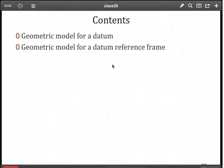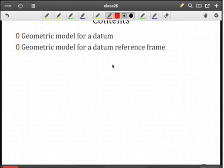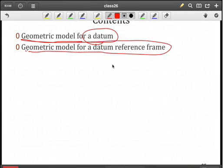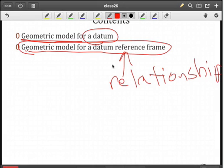First of all, we're going to need a geometric model for datum, and that model will obviously depend on the nature of the datum feature itself. And then secondly, as we saw in some of the assignments, we'll need to construct a complete geometric model for the datum reference frame, and here we'll pay particular attention to the relationship between datums, and by that we mean the primary, secondary, and tertiary.